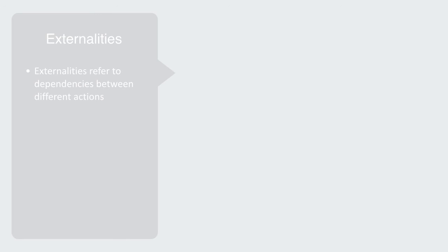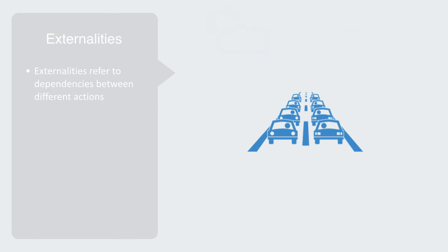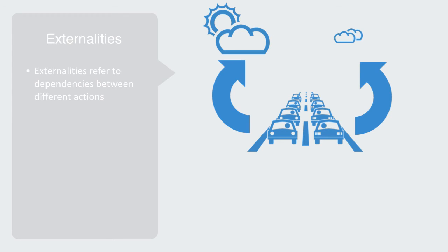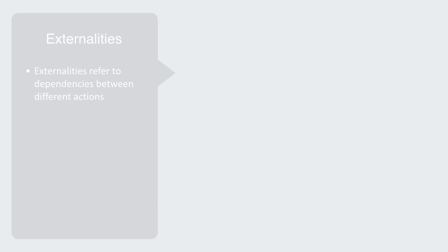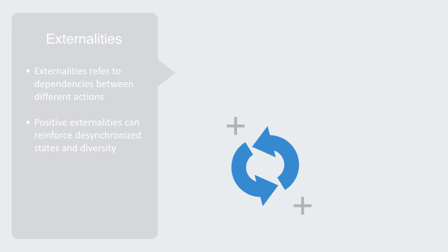Whereas feedback refers to dependencies between the same actions, externalities refer to dependencies between different actions. An example of an externality might be the relationship between the usage of personal transportation and air quality — the more cars, the lower the air quality. This is a negative externality. A positive externality might be one between the temperature on a given day and the sale of ice creams — the higher the temperature, the higher the ice cream sales are likely to be. In contrast to a positive feedback loop, positive externalities can reinforce desynchronized states and diversity as two or more different states or classes of things are reinforcing and sustaining each other. This is essentially what we call a synergy.